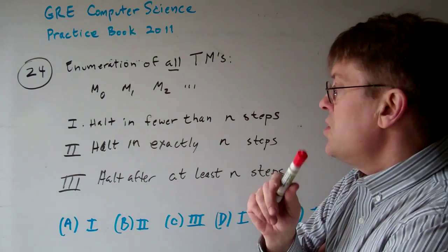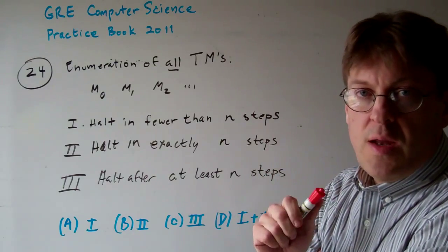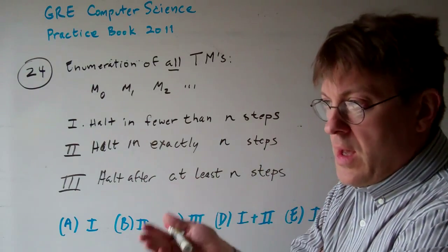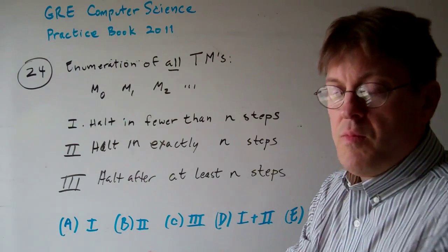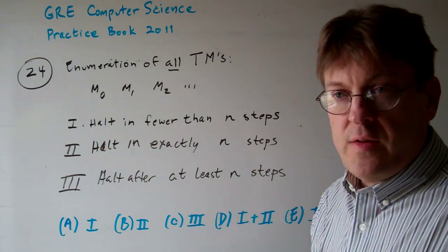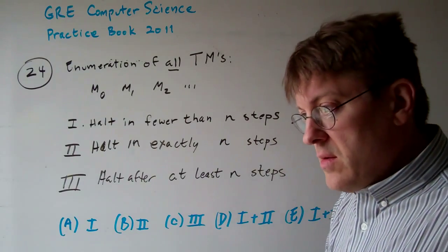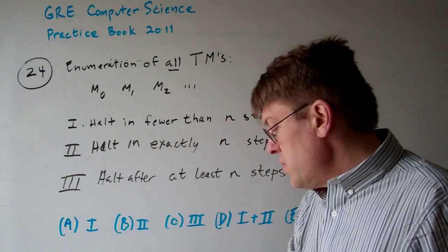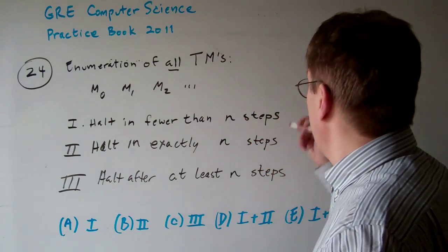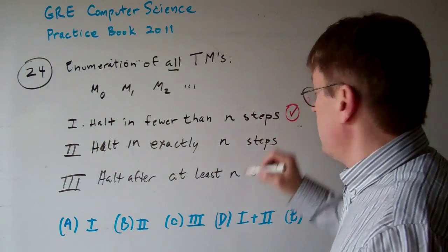Can we say that a given machine will halt in fewer than n steps? Sure, we can count how many steps. If it halted, then it halted. We have a definitive answer. If it didn't halt, we have a definitive answer that it has not halted. So either way, it is what we call decidable. So number one is, yes, that is decidable.